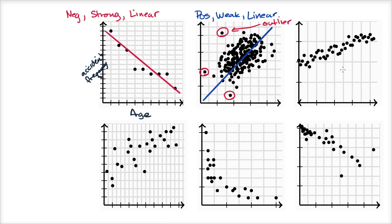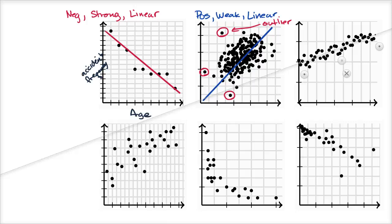Pause the video and see if you can think about this one. Is this positive or negative? Is it linear or non-linear? Is it strong or weak? I'll get my ruler tool out here. Seems like I can fit a line pretty well to this — I'll do the line in purple. This one looks like it's positive: as one variable increases, the other one does for these data points. I'd say this is pretty strong — the dots are pretty close to the line, it really does look like a little bit of a fat line if you just look at the dots. So positive, strong, linear relationship. None of these data points are really strong outliers; they're all pretty close to the line.